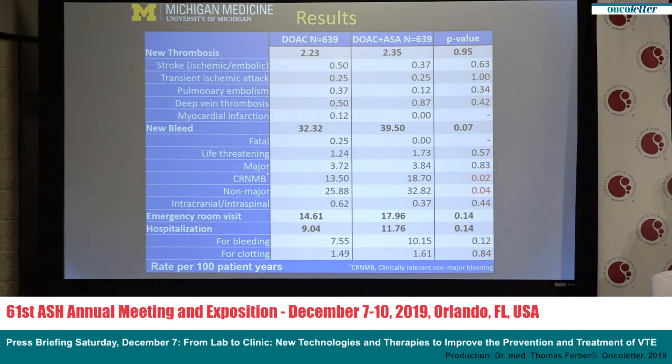This table shows our results. In the left column you can see patients on direct oral anticoagulant monotherapy alone, and in the central column the 639 patients on combination therapy with the addition of aspirin. The top line reflects the rate of new thrombosis per hundred patient years of follow-up, and the rates were very similar between the two groups: 2.35 thrombotic events per hundred patient years in combination therapy compared to 2.23 with direct oral anticoagulant therapy alone.